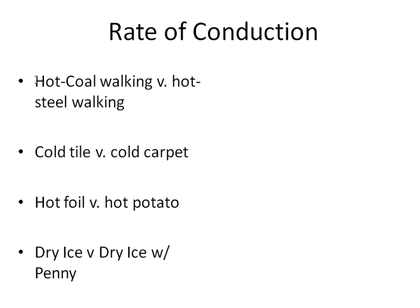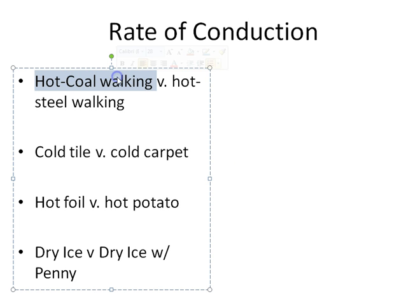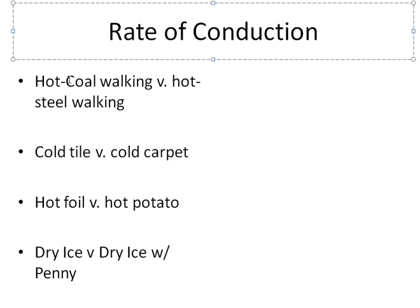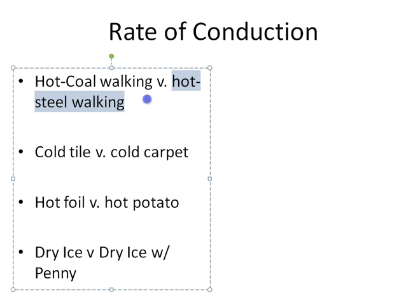Rate of conduction has important implications for everyday life. For instance, you've probably seen people walk across hot coals. Coal is not a great conductor of heat, so as long as you don't spend very much time on any given coal, you're not allowing the heat to transfer very effectively — it could still hurt, but if you move quickly and deliberately you'll be okay. Compare that to hot steel walking, which would be a terrible idea because steel conducts heat to your feet very rapidly and you'd get severe burns. That's why you don't see people hot steel walking.